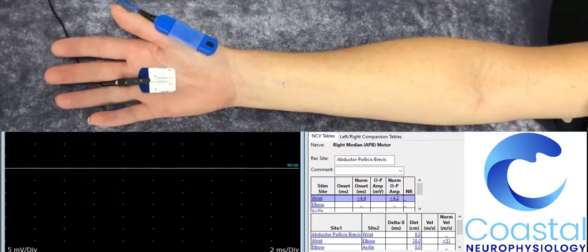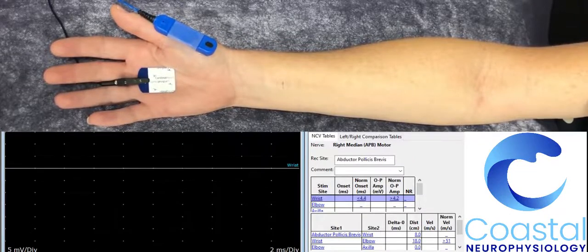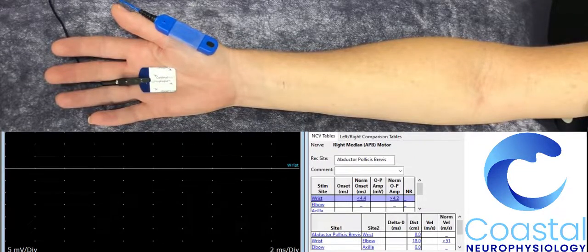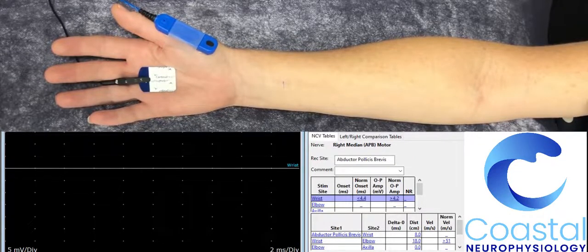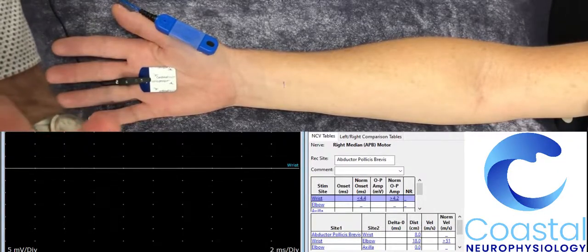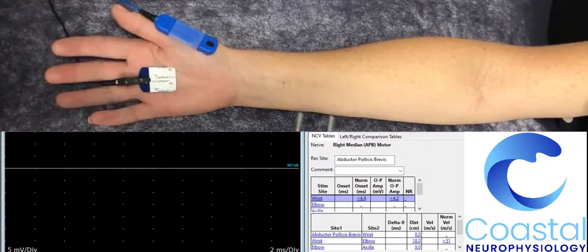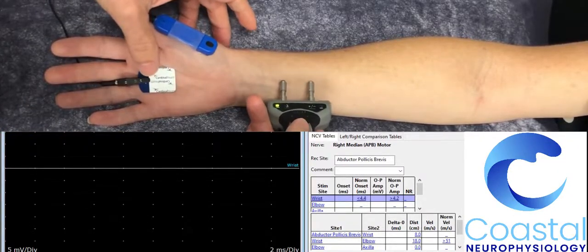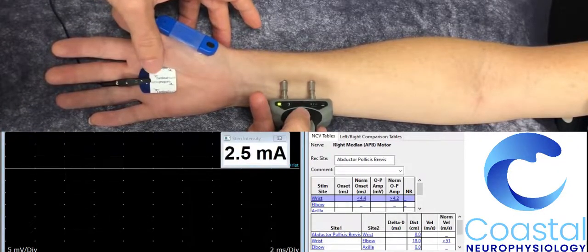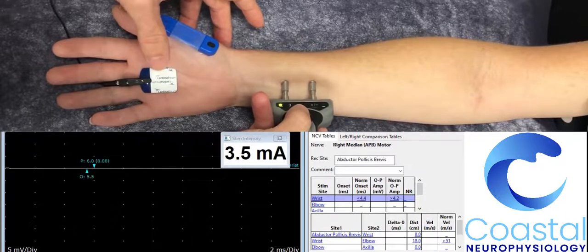I can then stimulate the nerve directly using an electrical stimulator. This will cause the muscles on the thumb to contract and propagate what we call a compound motor action potential.